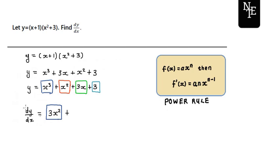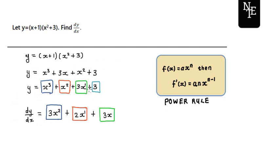Then we still have our plus sign. Now we're going to differentiate our second term in red. When we do that, we're going to have a coefficient of 1 times 2, which is still 2, times x to the exponent of 2 minus 1, which is going to be an exponent of 1. Then we do the same step for our green term. Over here we have an exponent of 1, so 3 times the exponent of 1 is still 3, and then we're going to have x to an exponent of 1 minus 1, which is going to be a new exponent of 0.